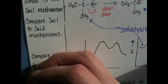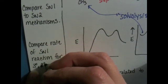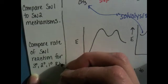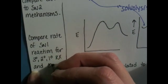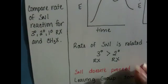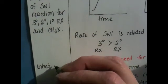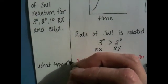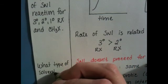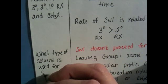Another study question: compare the rate of the SN1 reaction for tertiary, secondary, primary, and methyl alkyl halides. Also study: what type of solvent is used for SN1 reactions?